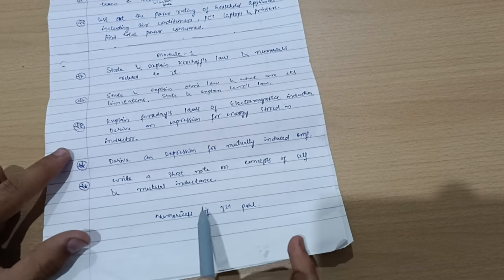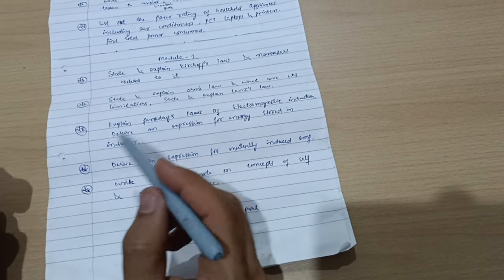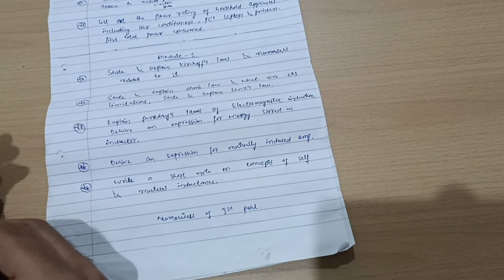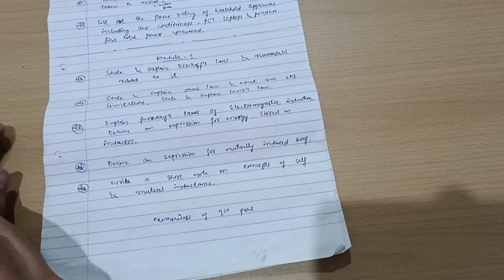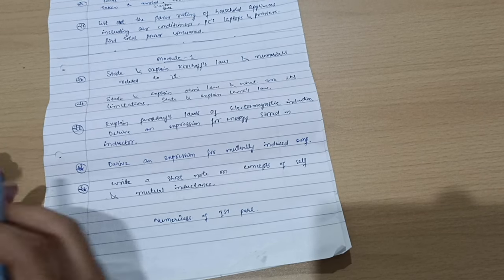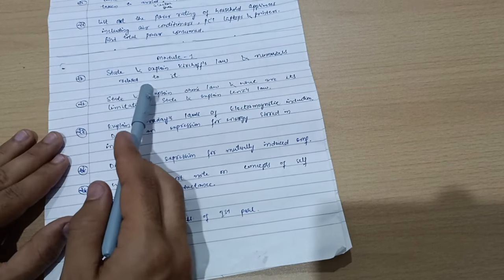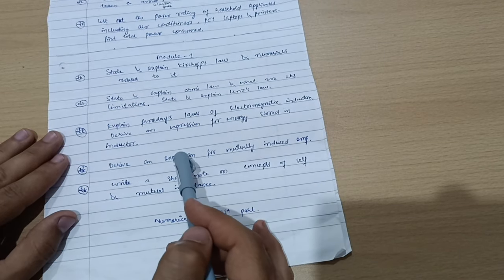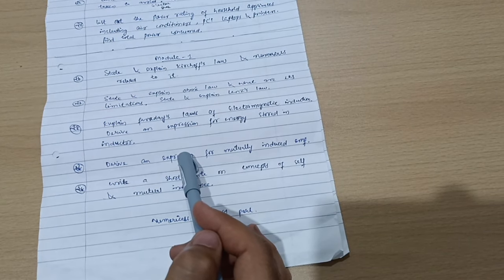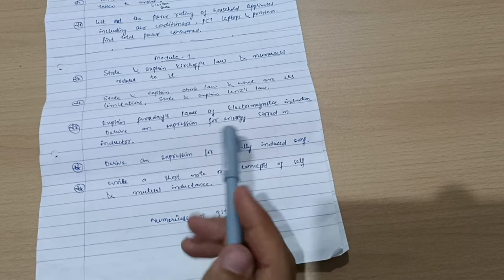Derive an expression for energy stored in inductor. Derive an expression for mutually induced EMF and write a short note on concepts of self and mutual inductance. You should go through numericals of the first chapter that is on Kirchhoff's law where you are supposed to calculate the current and voltage. Those are simpler ones. Better to go for first part numericals. You can leave the magnetic numericals.